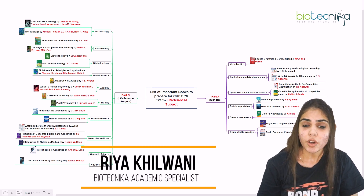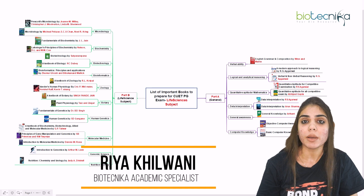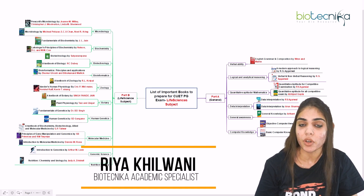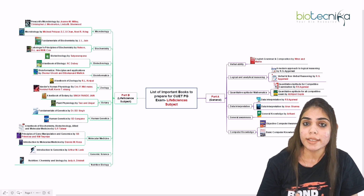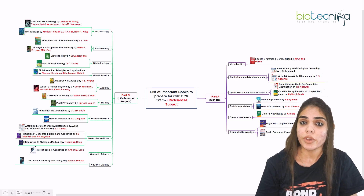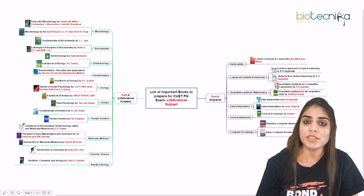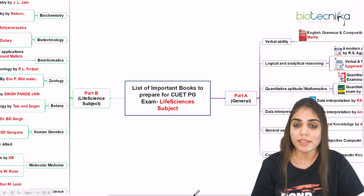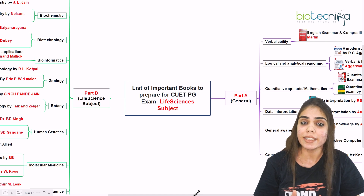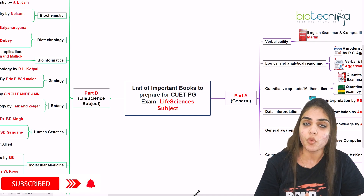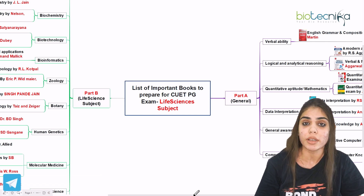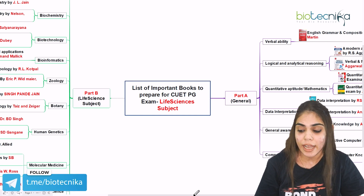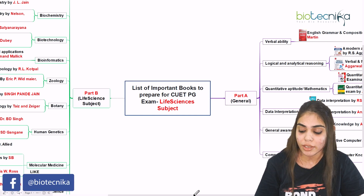Hello everyone, welcome back. Here I will be talking about the list of reference books needed to prepare for the CUET PG exam, specifically for the Life Sciences exam. We will be talking about both sections. The CUET PG Life Sciences examination has two parts: Part A, which consists of general aptitude, and Part B, which consists of the Life Sciences subject. Part A covers verbal ability, logical and analytical reasoning, quantitative aptitude, data interpretation, general awareness, and computer knowledge.